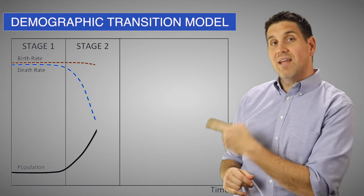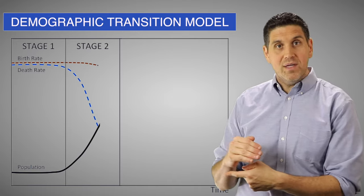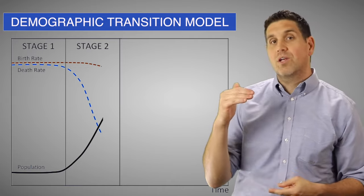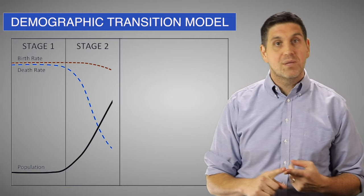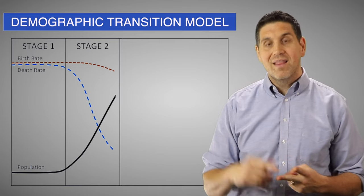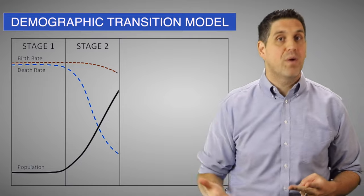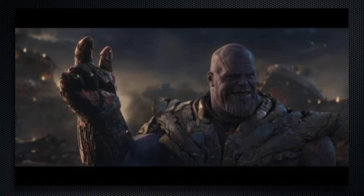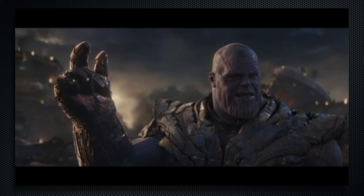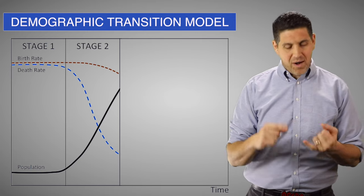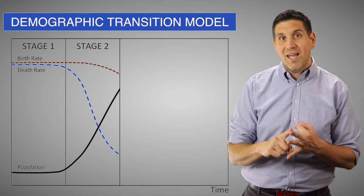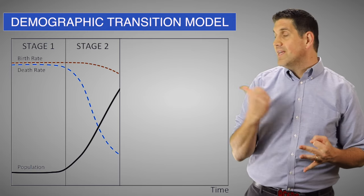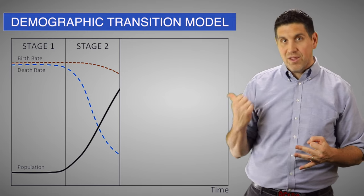Population here in Stage 2 is increasing at an increasing rate, but industrialization brought new technologies and more productivity that led to more food production. And industrialization also led to better healthcare, education, and sanitation, which decreased the death rate.